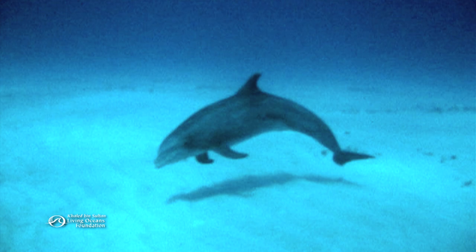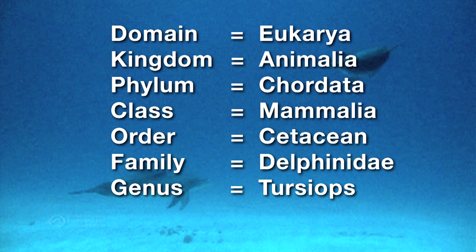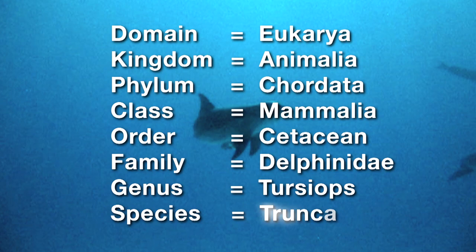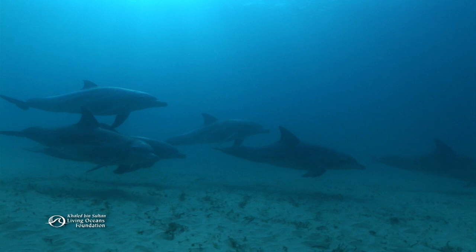The last classification is species. Each species has a unique name. In this case, it's truncatus. The scientific name for any creature is a combination of its genus and its species. This one is Tursiops truncatus, but you know it as the bottlenose dolphin.